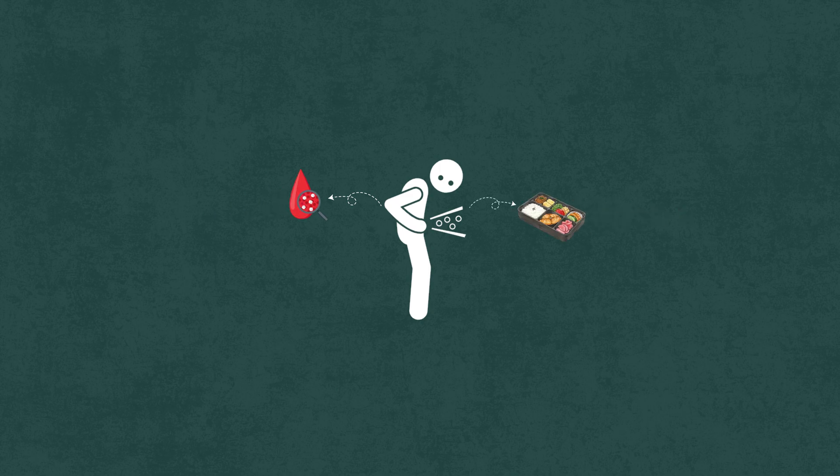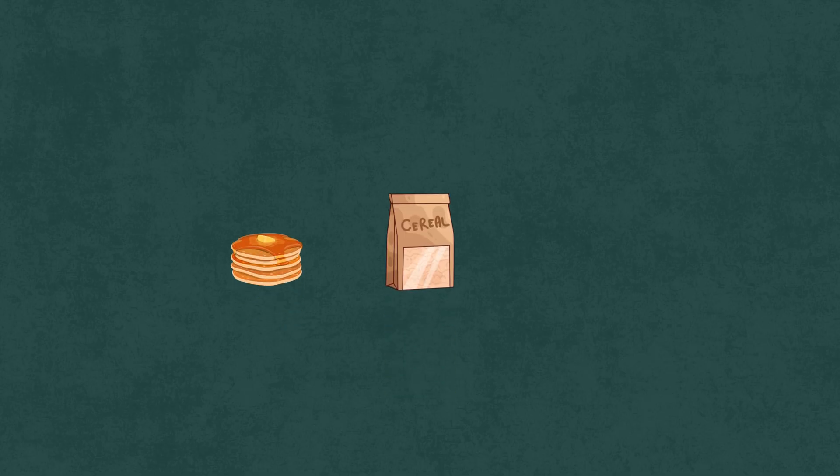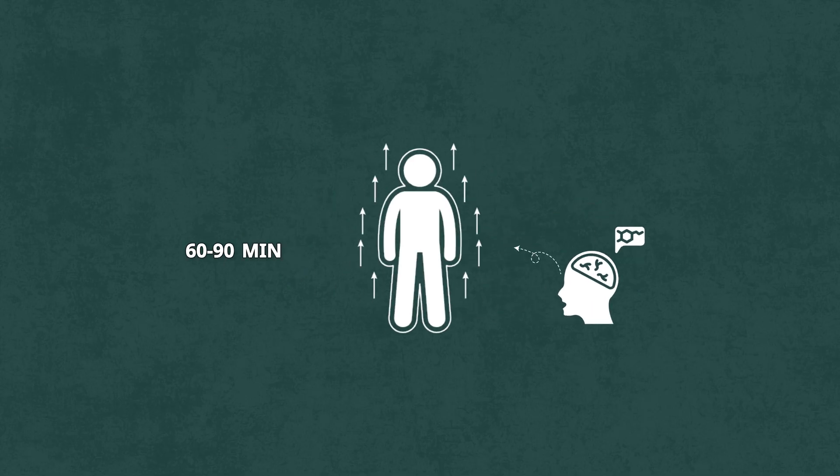A high sugar breakfast, like cereal, pancakes, or even a banana with coffee, causes a rapid spike in blood sugar. Your brain releases dopamine, you feel that short burst of energy, but within 60 to 90 minutes, insulin kicks in, and blood sugar crashes.